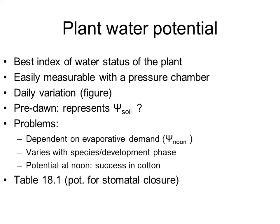Raising in the level of complexity, we could measure the plant water potential — usually the leaf water potential. It is the best indicator of water status of the plant because we talk about water stress when the water potential becomes very negative. So it is a direct measurement of the water status.